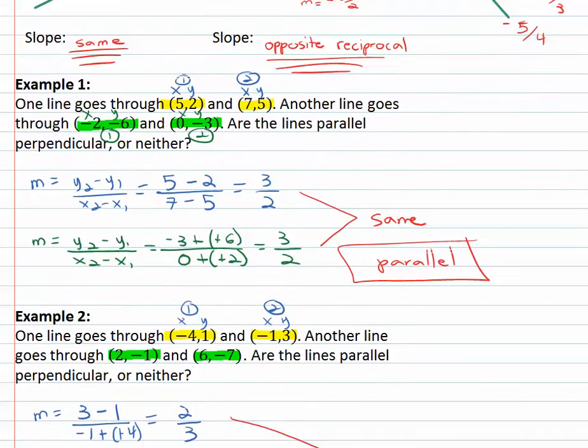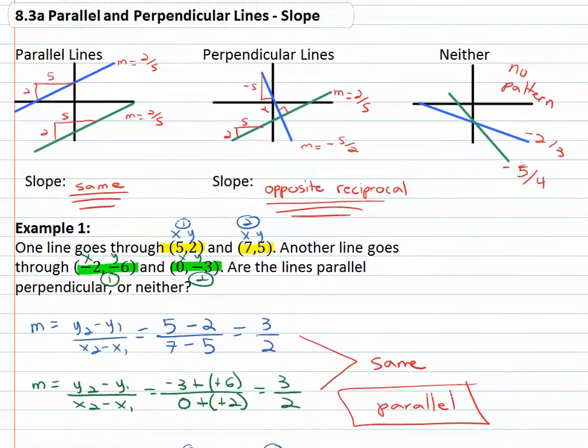To summarize the important relationships: same slope means the lines are parallel, and opposite reciprocal slopes means the lines are perpendicular.